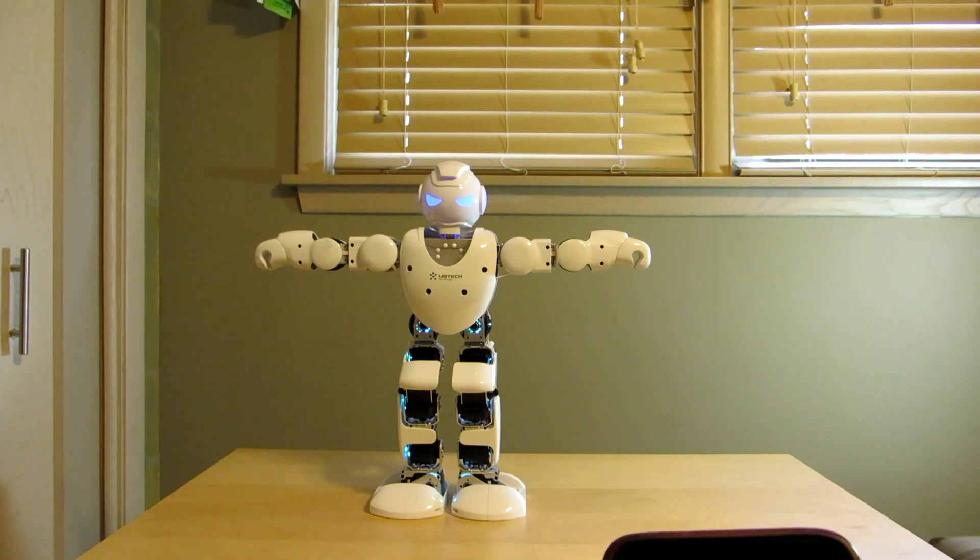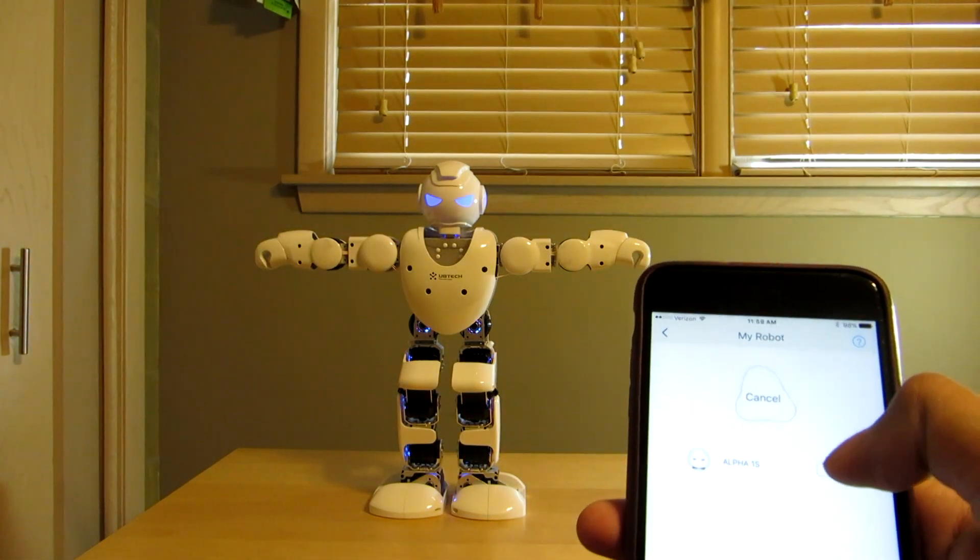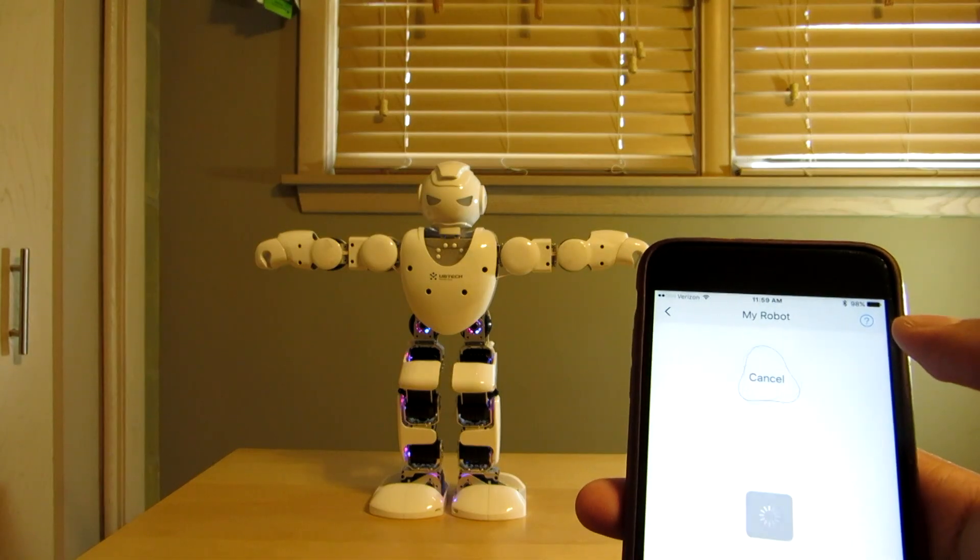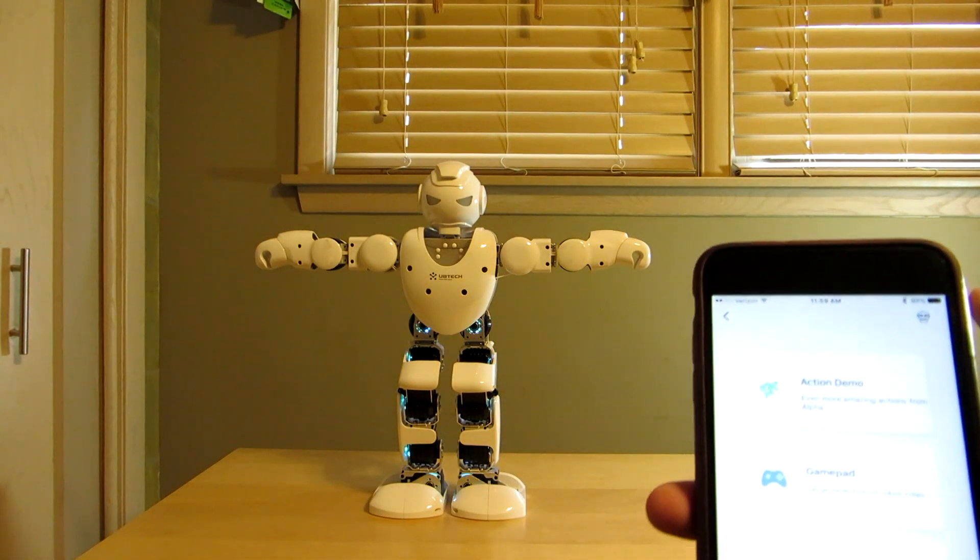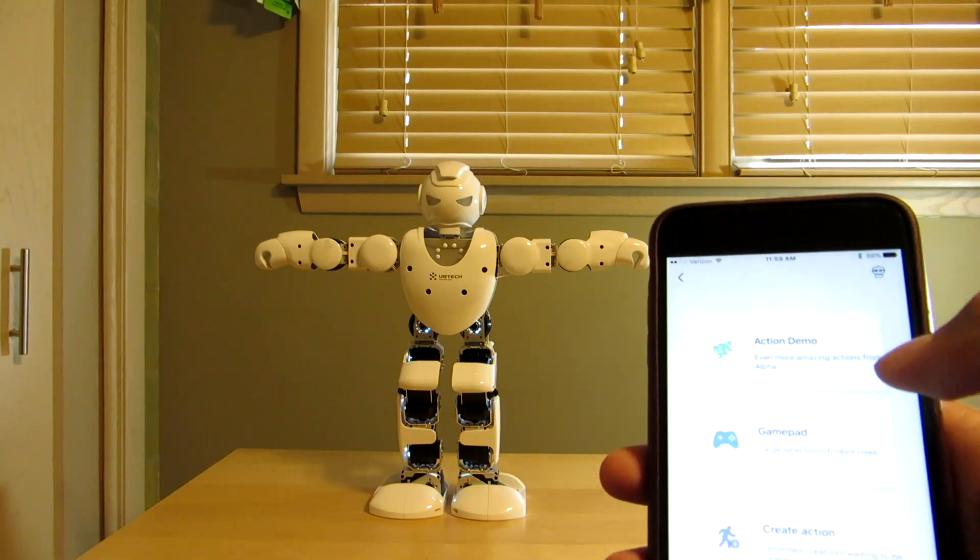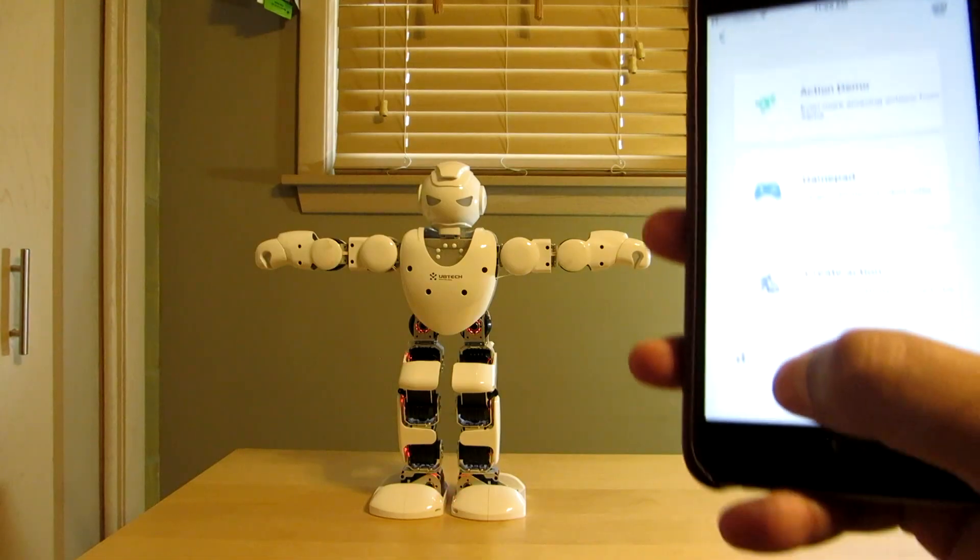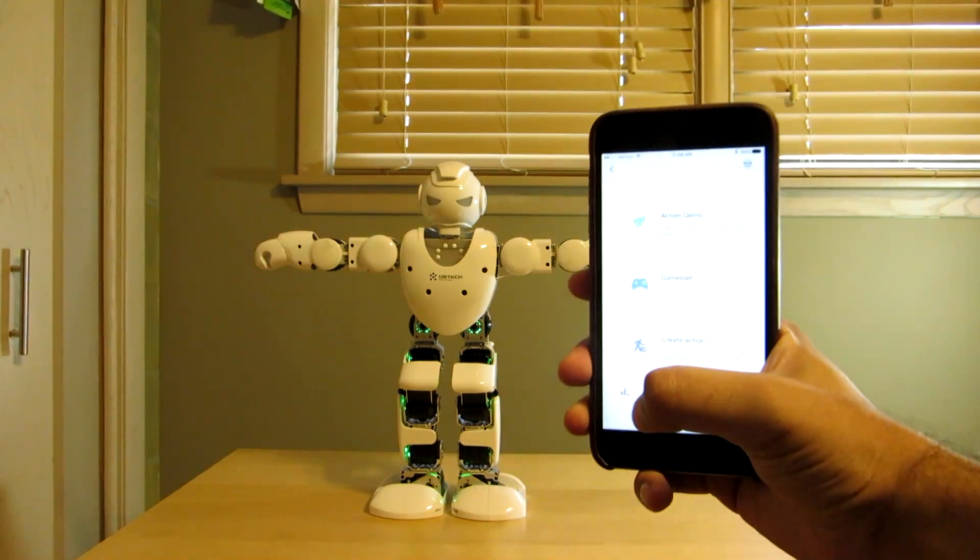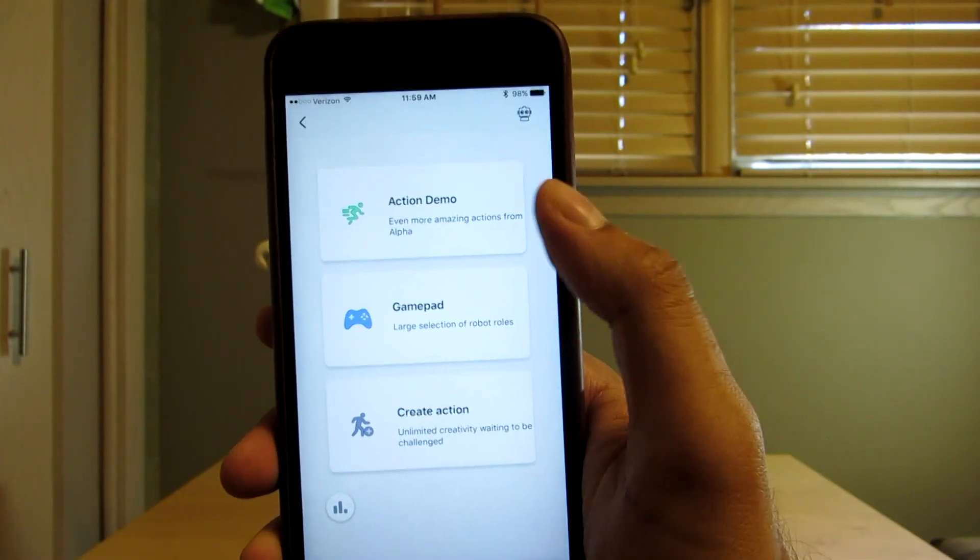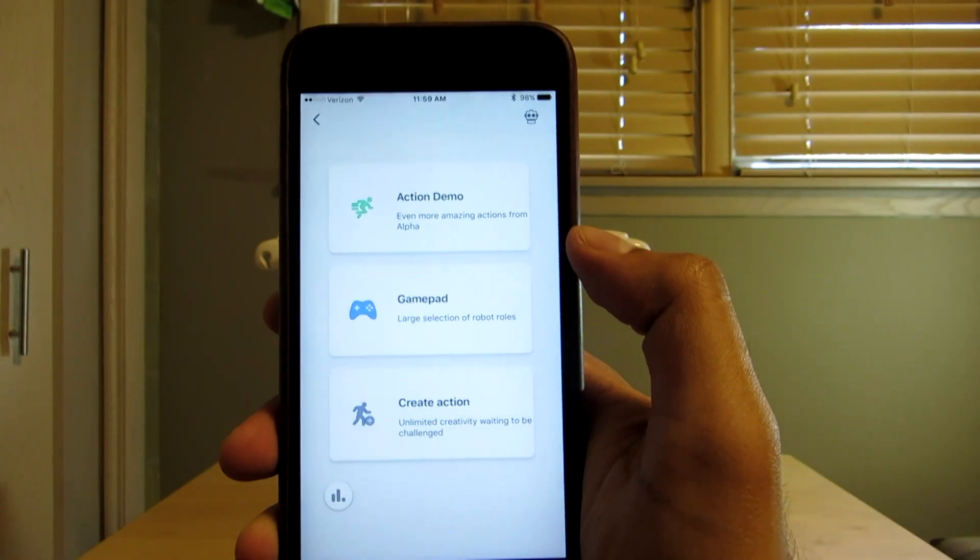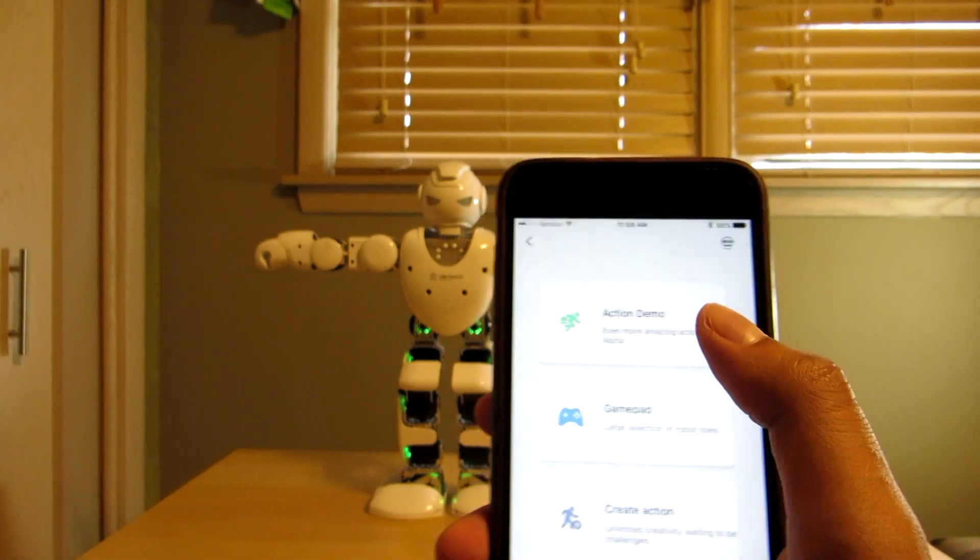I'm going to go ahead and try clicking this button right here to connect to him. Okay, and connecting to Alpha. Okay, so you heard a sound. So there's something called action demo, game pad and create action. And there's something a little down here that looks like a statistic button. So let's go ahead and try something. Let's click action demo.